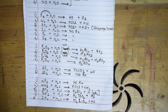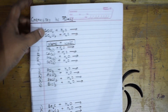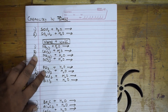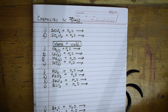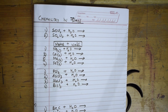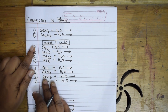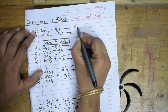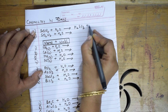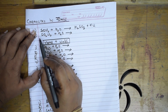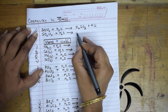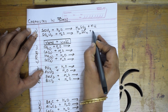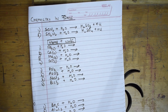For SOCl2 (thionyl chloride) combining with water, the product is H2SO3 plus HCl. For SO2Cl2 (sulfuryl chloride) combining with water, the product is H2SO4 plus HCl. Remember this difference between thionyl chloride and sulfuryl chloride.